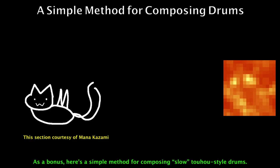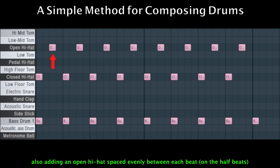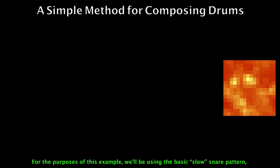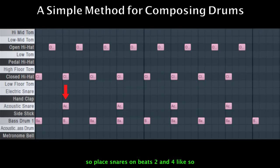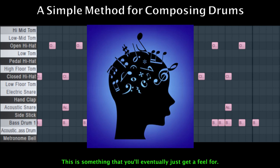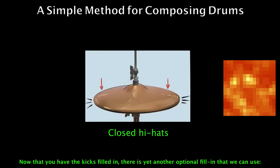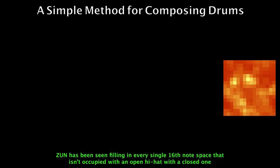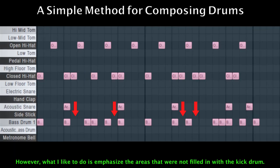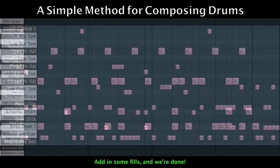As a bonus, here's a simple method for composing slow Toho-style drums. Start off simple with the kick and closed hi-hat on each beat, also adding an open hi-hat spaced evenly between each beat on the half beats. Next, decide on which type of snare pattern you want. For this example, we'll use the basic slow snare pattern, placing snares on beats 2 and 4. Now that you have a base pattern, you can begin to fill it in with more kicks — you want it to fit the song without becoming too overwhelming. There is yet another optional fill-in: closed hi-hats. You can pretty much do whatever you want with these; some composers fill in every single sixteenth note space not occupied by an open hi-hat. What I like to do is emphasize the areas not filled in with the kick drum. Add in some fills and you're done.